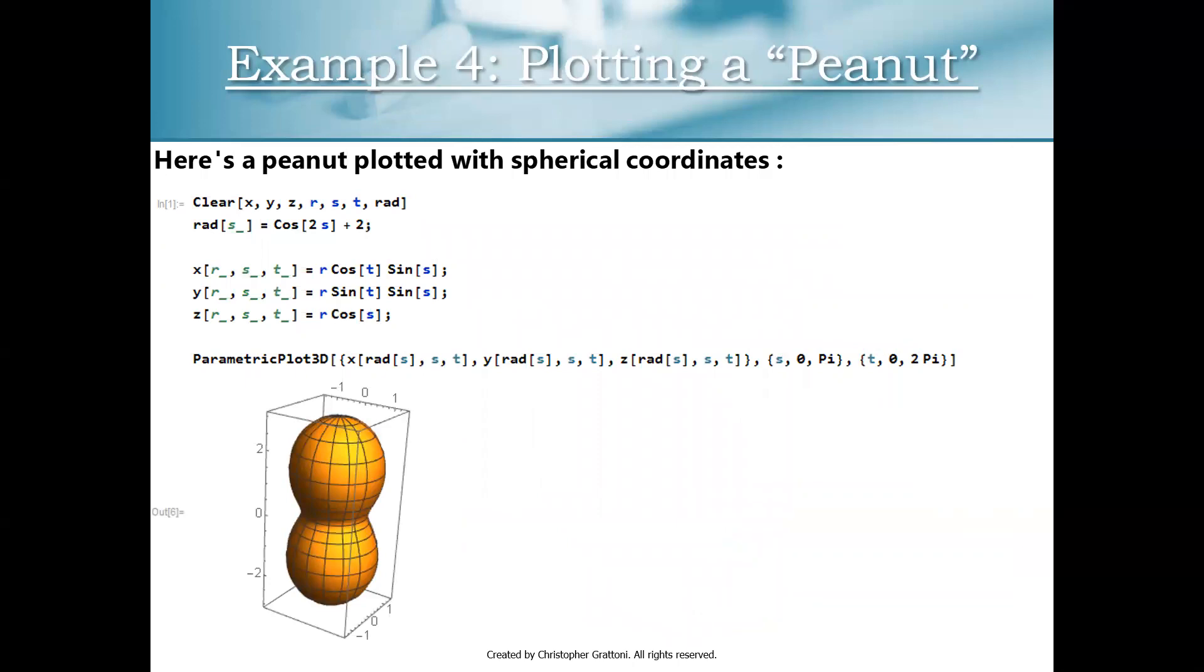And now in this final example, we're going to use what we've learned throughout this slideshow, just to plot an interesting looking region. And so I created a plot of a peanut looking shape. And here's how I created it. So first of all, I started with the building blocks of spherical coordinates. So I started with standard spherical coordinates, R cosine T sine S, R sine T sine S, R cosine S. Then I said, you know what, let's take R here. And instead of keeping that constant like you would for a sphere, I'm going to define a function rad of S. And I'm going to make the distance from the origin for this shape depend on my zenith angle. And it'll depend on S.